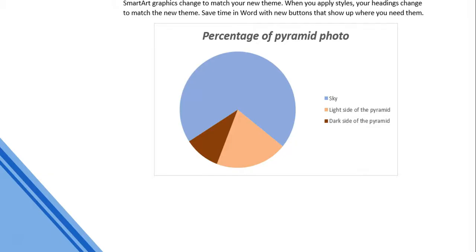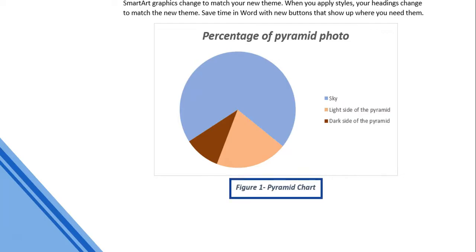The next section in References we're going to cover is captions. Captions are little labels we attach to items like diagrams - a message saying what that particular diagram is, for example 'Figure 1 - Pyramid Chart'. That's very useful when making a document. You can specify where you want the caption on the image - underneath it or to the side.